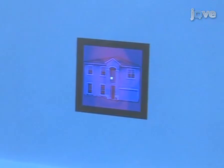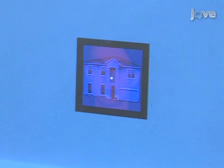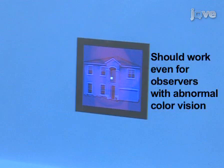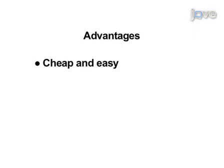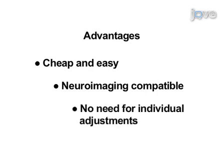Note that this technique has nothing to do with color vision. The colors are simply used to segregate the two images, each to one eye. This should work even for observers with abnormal color vision. The advantages of using red-blue goggles include: the equipment is very inexpensive and stimuli are very easy to prepare. Red-blue goggles can easily be used with all neuroimaging methods, including MRI. And finally, red-blue goggles do not require head stabilization or individual adjustment of the viewing device for each observer.